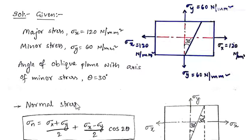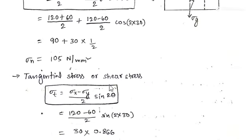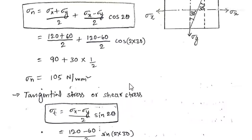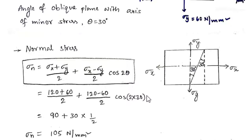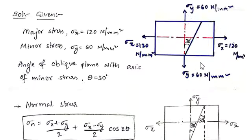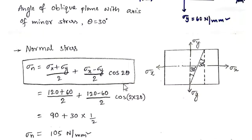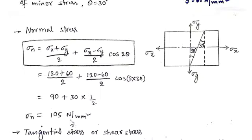For normal stress on the oblique plane, when subjected to two stresses, the formula is: σn = (σx + σy)/2 + (σx − σy)/2 × cos 2θ. For the derivation of this formula, please refer to my previous video on principal stresses and strains. Here we take the major stress σx = 120 N/mm² and minor stress σy = 60 N/mm². Substituting with θ = 30°: the first term gives 90, the second term is 30 × cos 60° = 30 × 1/2 = 15, giving σn = 105 N/mm².